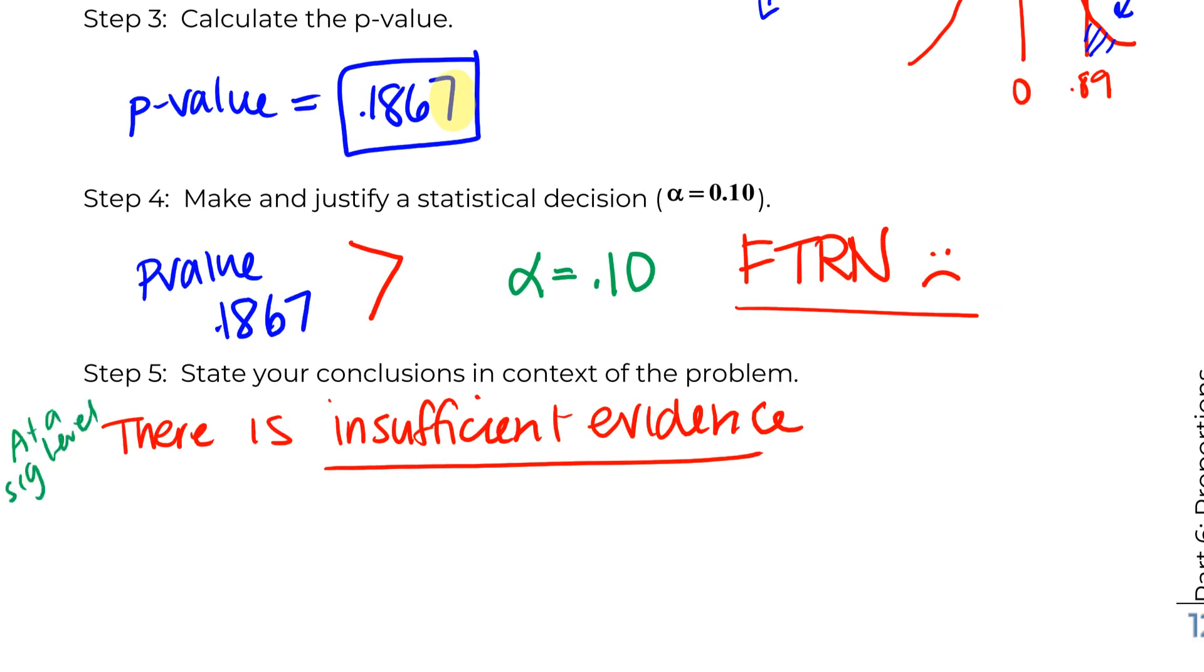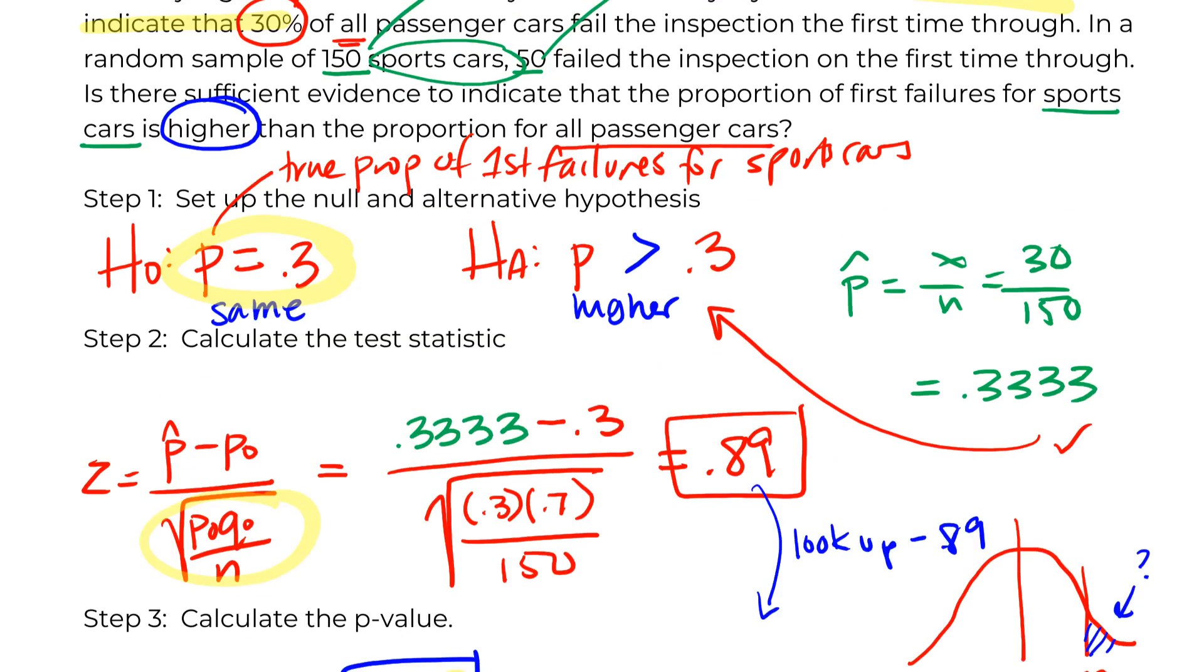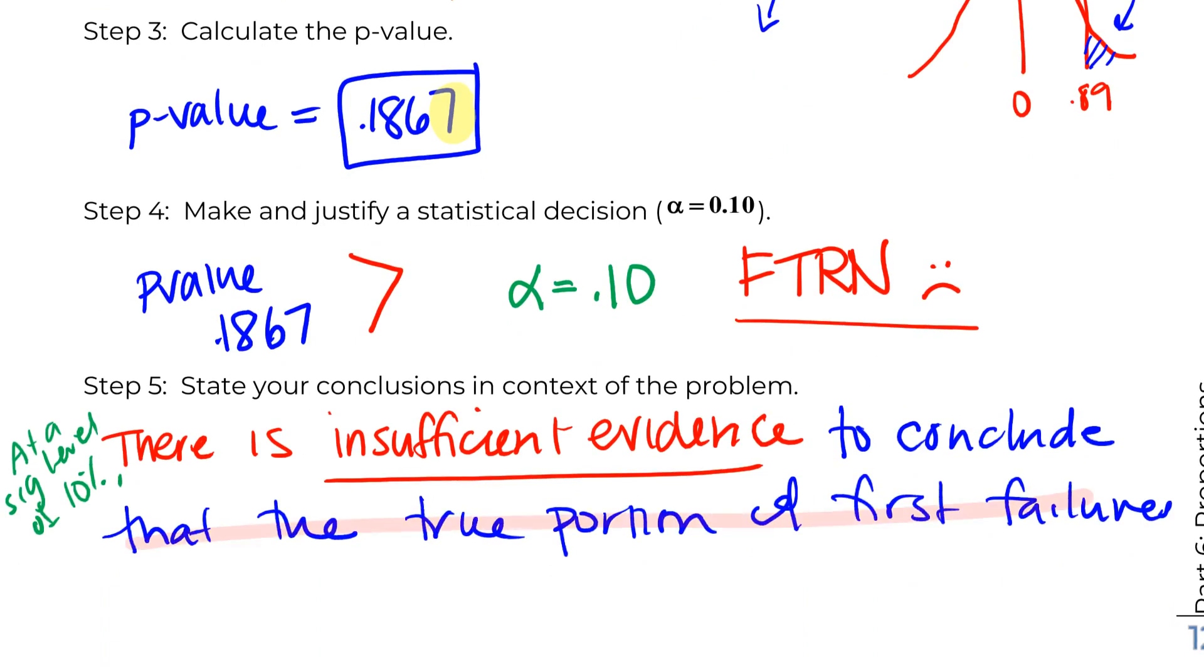So that is from the fail to reject the null. Remember I said if you want to get a bonus on the test, you're going to say at a significance level of 10% and then start your sentence. And then this is all about that alternative hypothesis, right? There is insufficient evidence to conclude or to show or to prove, whatever you want to use in terms of your wording there, to support that the true proportion of first failures—and right now I'm just going back to this last sentence of this whole thing or our alternative, right? So I'm just going to match that essentially because that's what we're trying to prove.